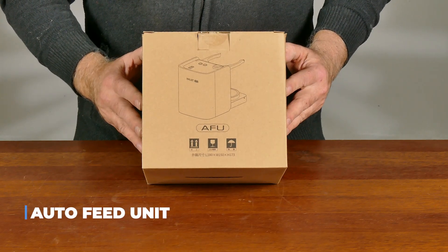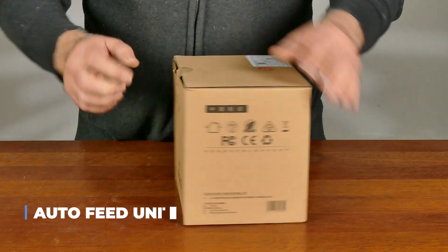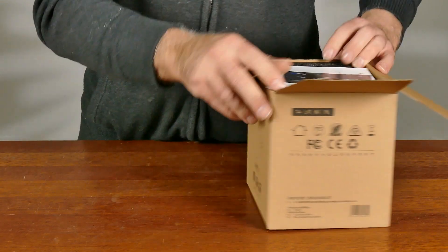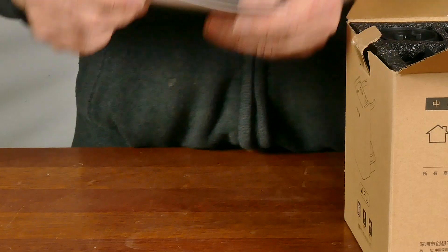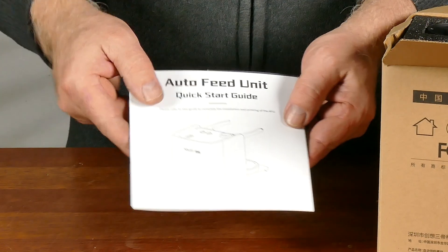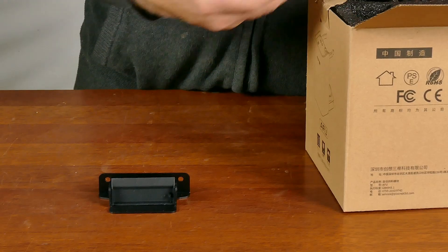This is the automatic feed unit and this needs to sit either on the side, and if your bench is deep enough it can be behind it. As I fumble through the paperwork, it comes with the usual instruction manual for the unit. It's a quick start guide. There's not that much to it.